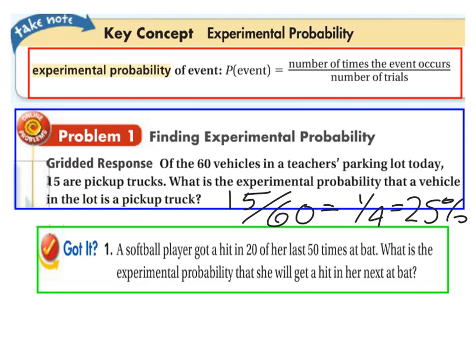Another place where we commonly use experimental probability is in sports. If we have a softball player who got a hit in 20 of her last 50 times at bat, what is the experimental probability that she will get a hit in her next at bat? We take the number of times the event occurred, 20, divided by the number of trials, 50. That reduces to 2 fifths, which would be 40%. Softball or baseball players might say she's batting 400.